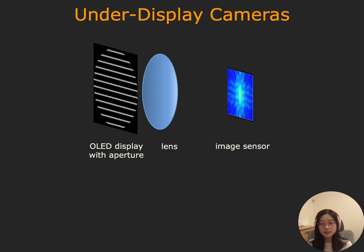However, building a high-quality under-display camera is not an easy task. In the construction of an under-display camera, we have a lens and an image sensor observing a scene through the openings of the display. The display acts as an aperture on the lens, and it has features in the orders of tens to hundreds of microns. These features diffract light, which results in a large blur.